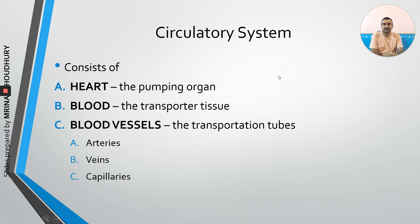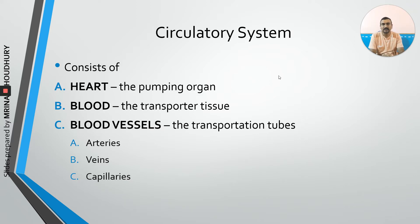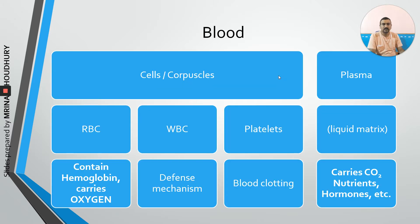The circulatory system consists of three main components: the heart, which is the pumping organ; the blood, which is the transporter tissue that carries substances; and the blood vessels, which are the various tubes through which transportation takes place. There are three main types of blood vessels: arteries, veins, and capillaries. Let us look at them one by one.